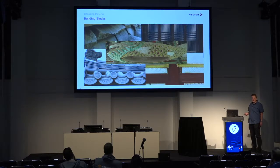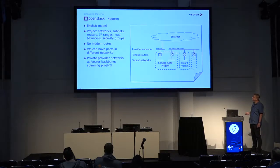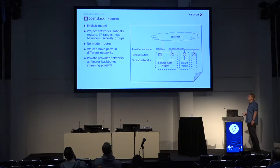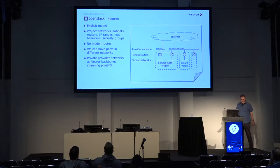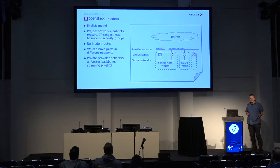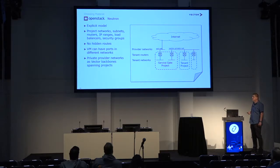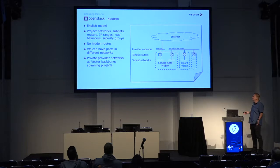Let me show what third-party building blocks we have used, starting with OpenStack. I'm highlighting those with the most differentiating and important advantages for us. The first is Neutron, which we prefer due to its very explicit model: it has project networks, subnets, routers, IP ranges, load balancers, security groups managing port access — all components you can plug together just as you would with physical components. Components that haven't been connected simply aren't connected: there are no hidden routes and no ports popping up out of the blue providing platform services or routes into the internet.